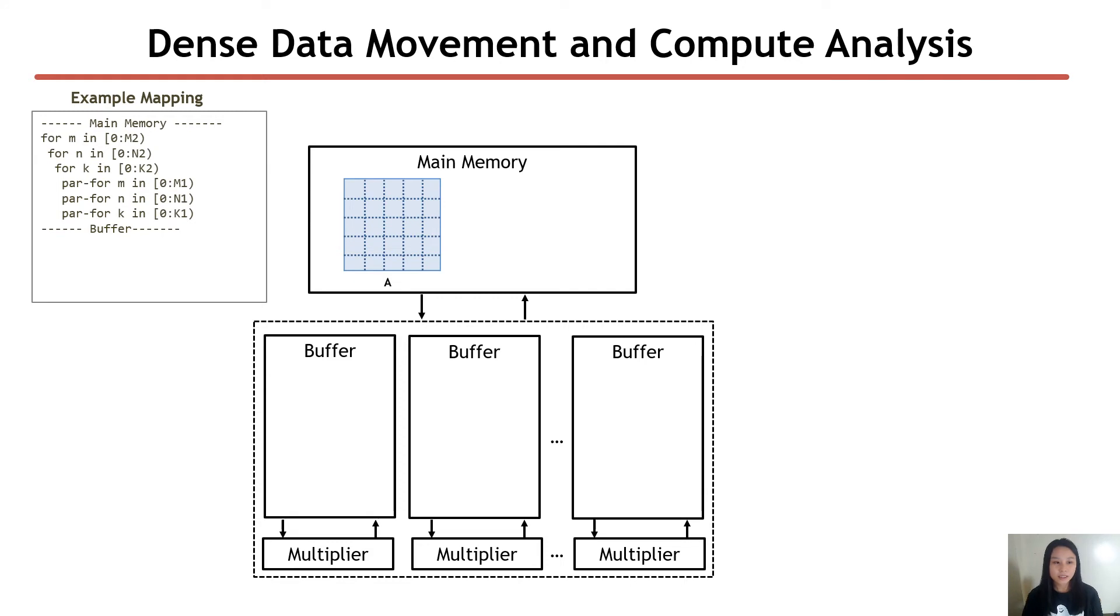First, let's take a look at these four loops associated with the main memory. What they do essentially is slice this tensor A into multiple subtensors. For all of the parallel for loops, they will cause the main memory to send the subtiles to the lower level buffers at the same time to do parallel processing as shown here.